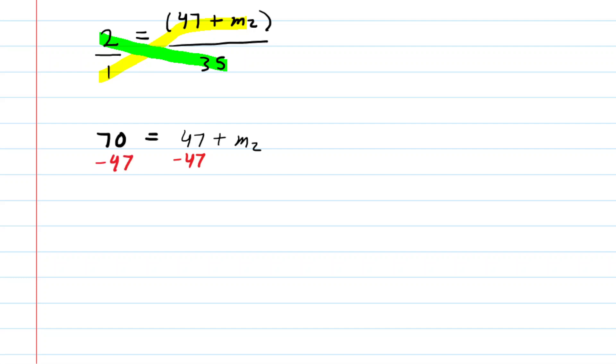Now all we need to do is subtract 47 from both sides of this equation. And when we do so, we should end up with a mass of 23 kilograms. So the final answer here for m2 is going to be 23 kilograms.